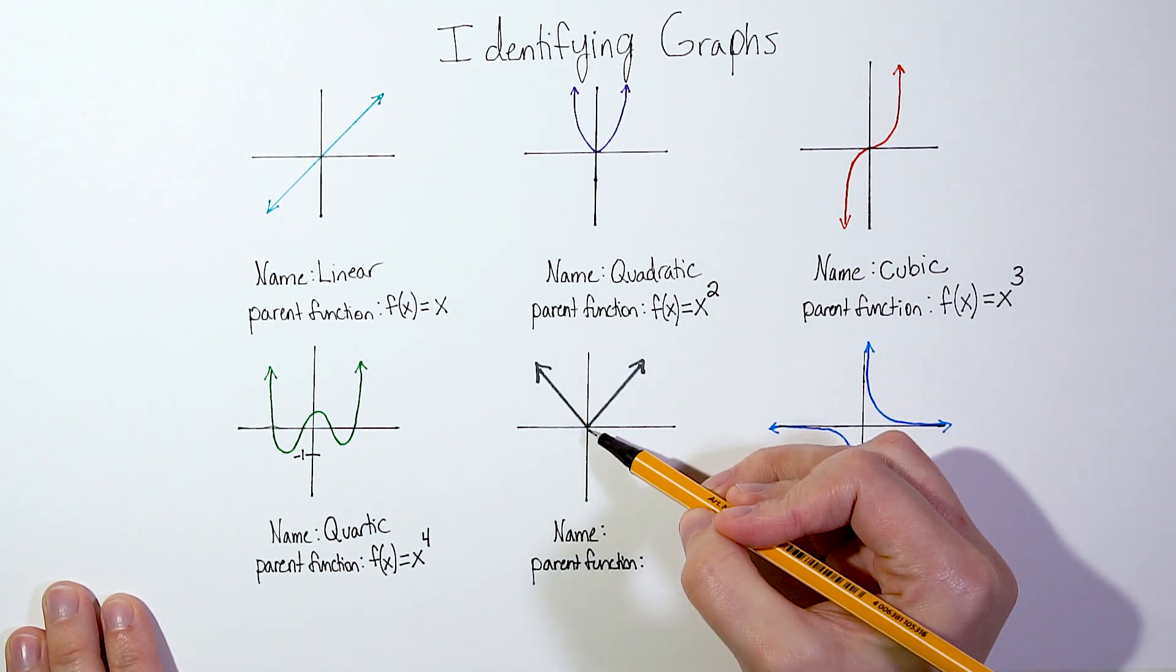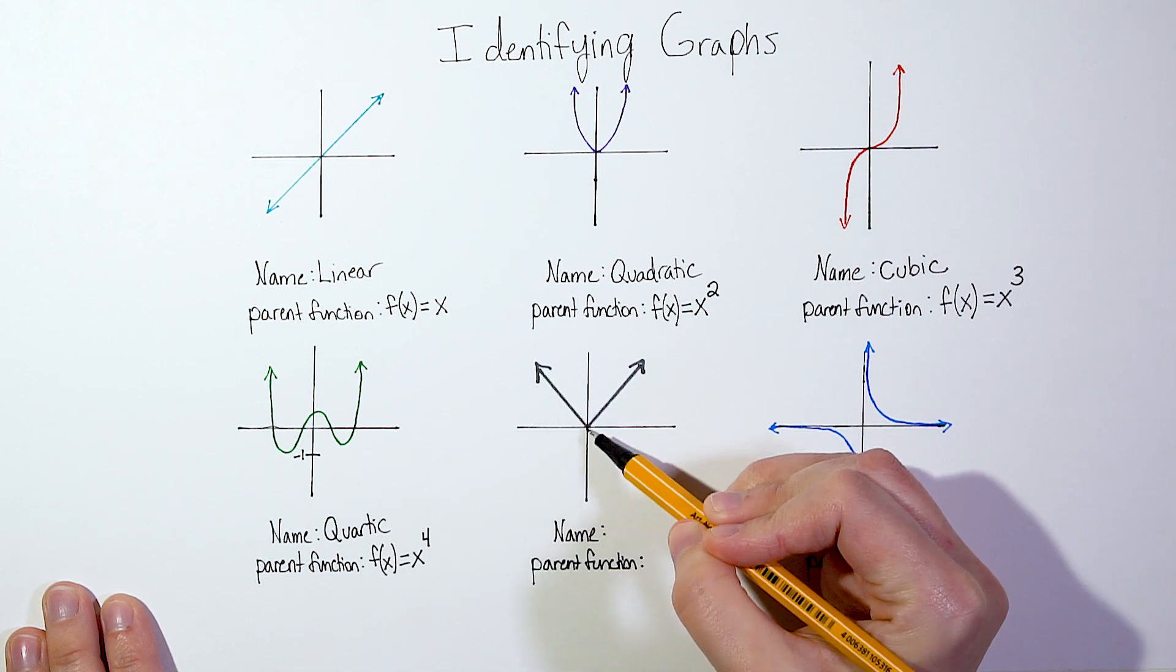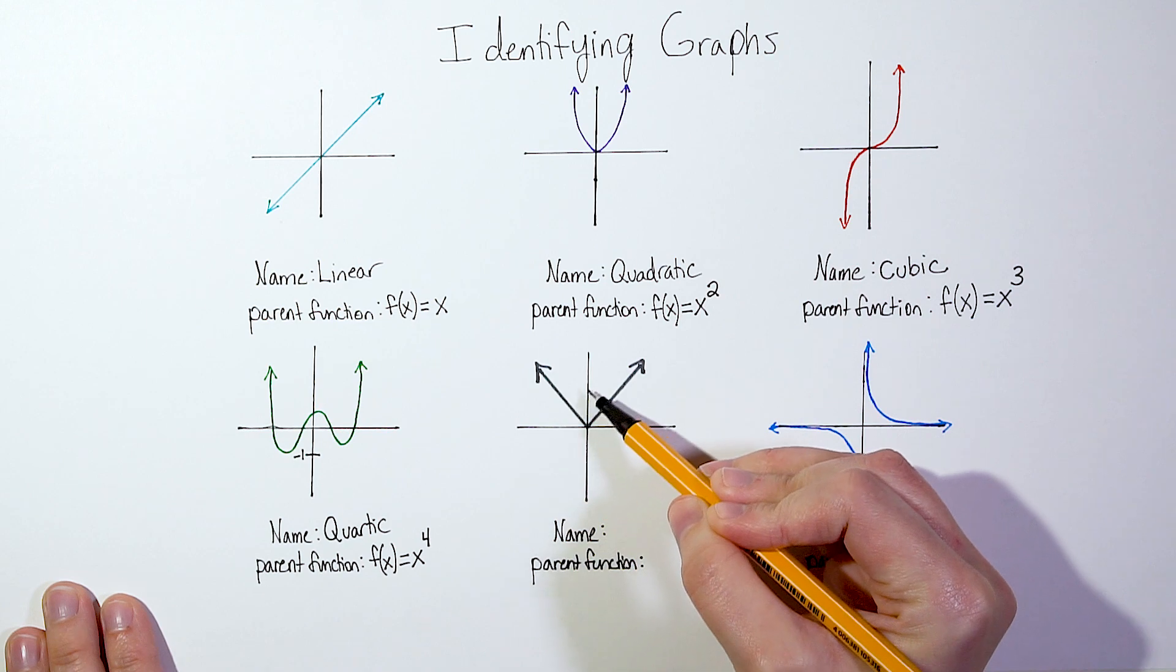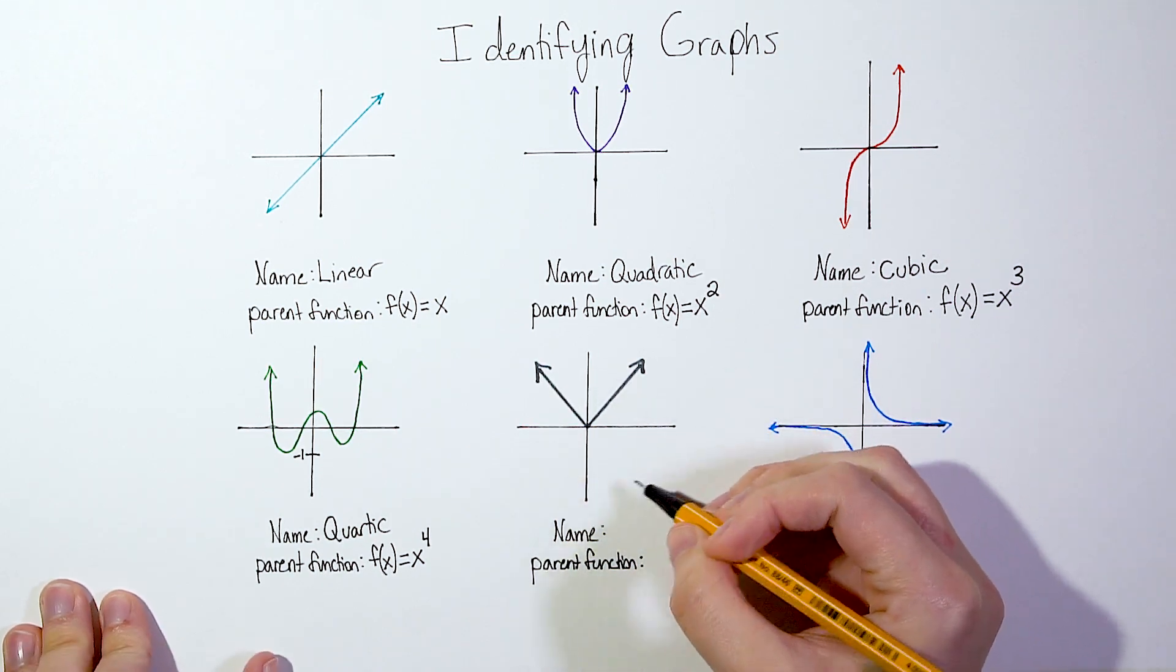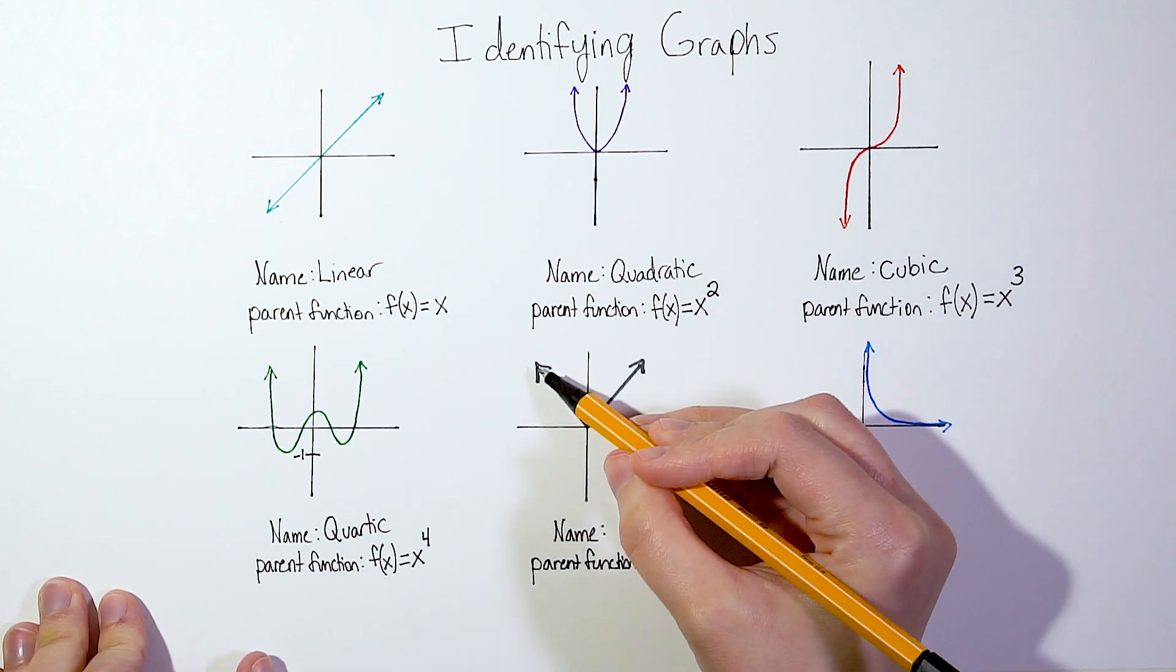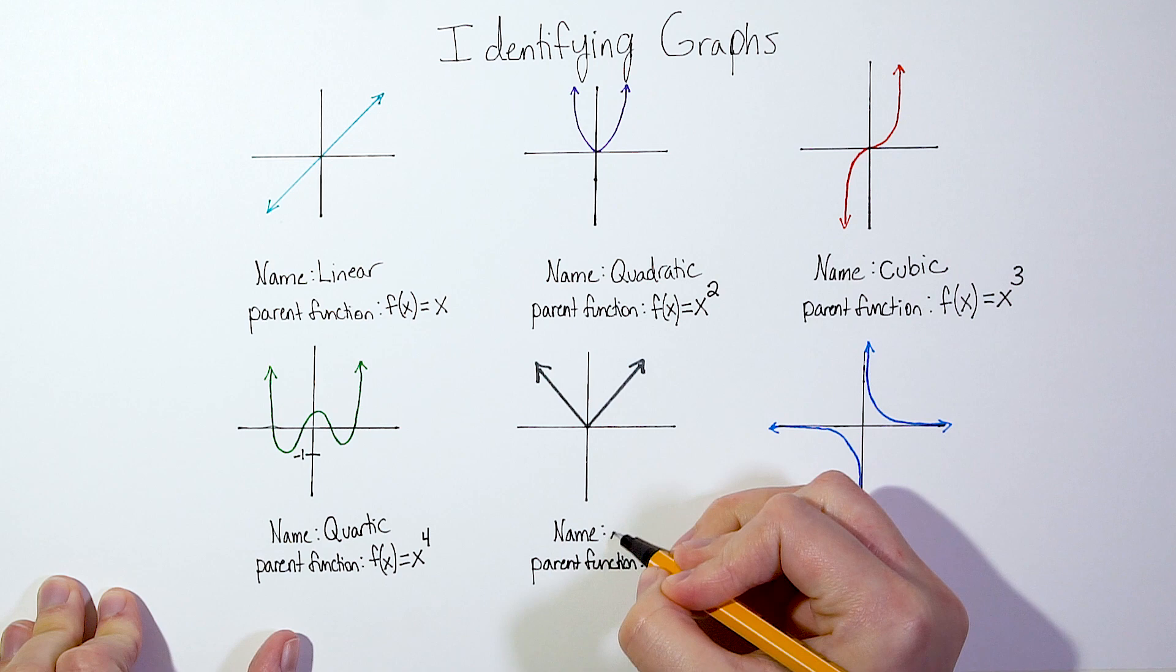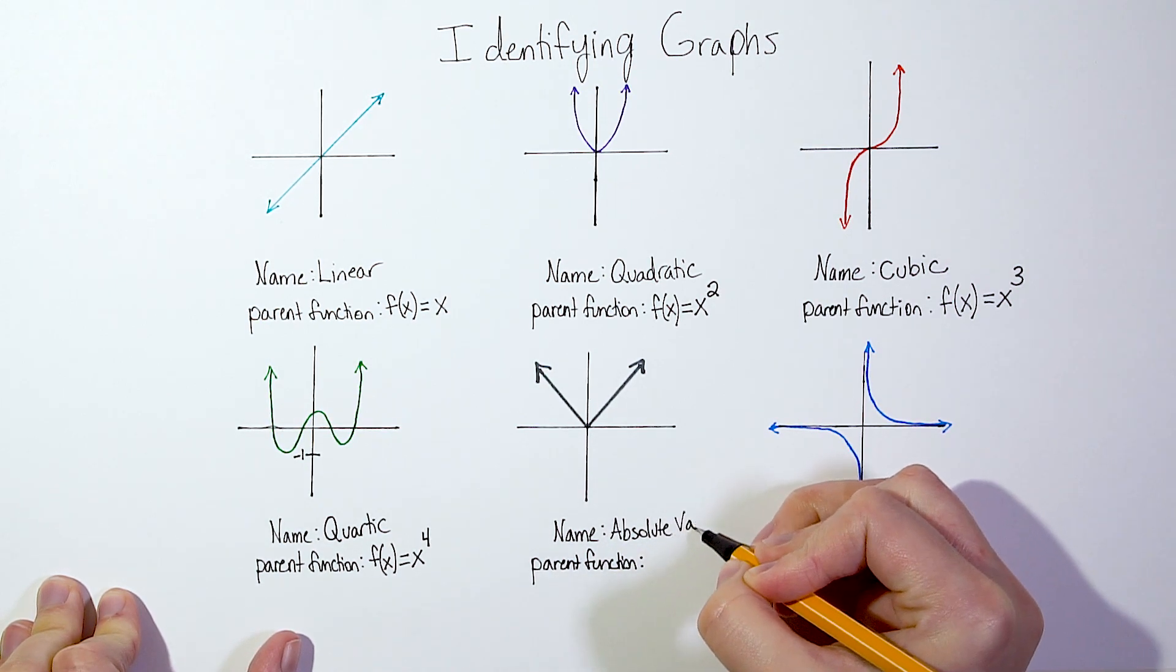Our next graph is a V shaped graph. So notice this is kind of like a traditional V facing up. It's not always going to be facing up. It could be the reverse. It could be facing down. But this is called, and it's really easy to remember. So when you see a V on your graph, that is an absolute value graph.